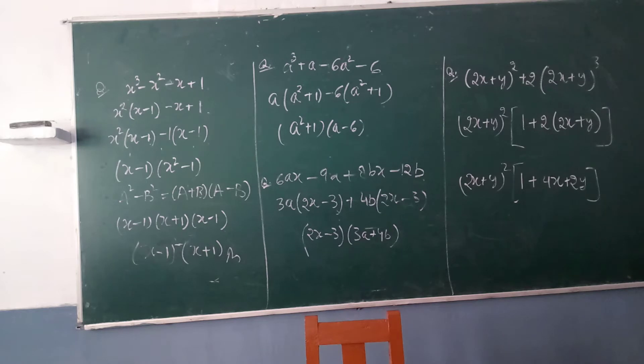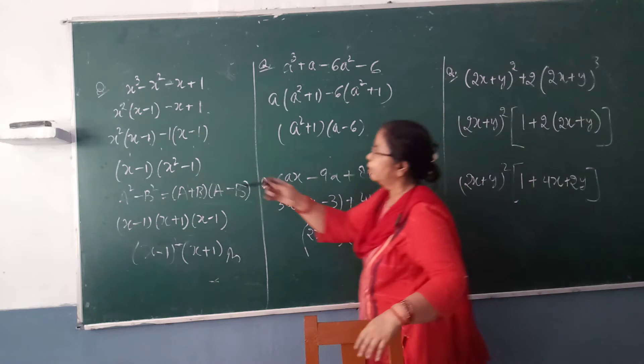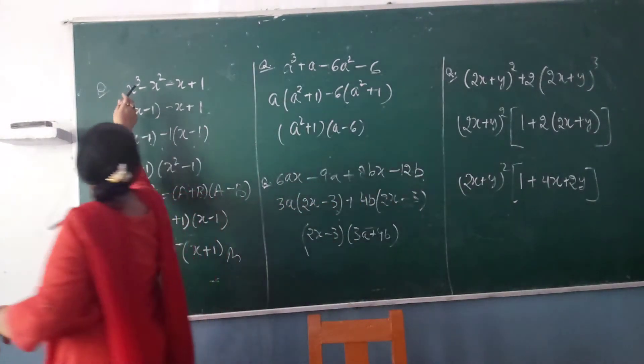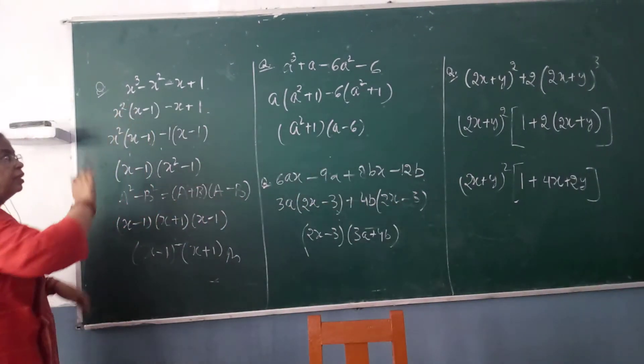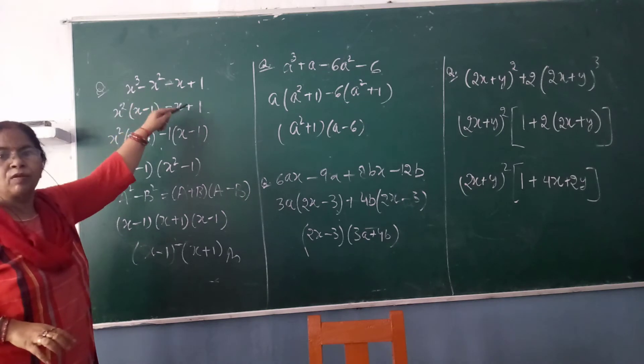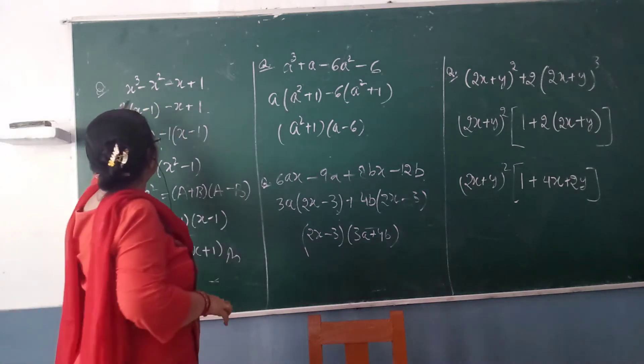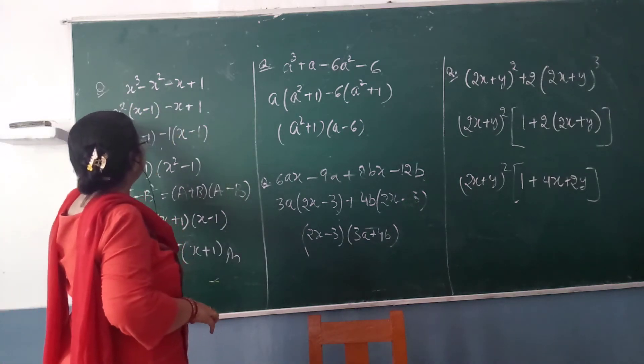What will you take common in the first and second term? You will see that x² you can take common here, so then in brackets it will come x - 1. The remaining terms we will copy again here. Now if you multiply x² by this, it should become x³ and minus x².